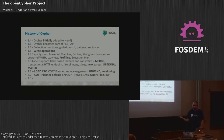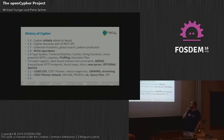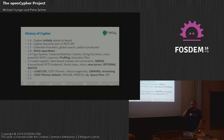In Neo4j 2.0 there was a big change — we added the label concept to the property graph model, which also came through in Cypher. We added the optional match syntax, a new merge keyword as a get-or-create operation, literal maps, a new parser based on Parboiled, and optional match which is like an outer join.